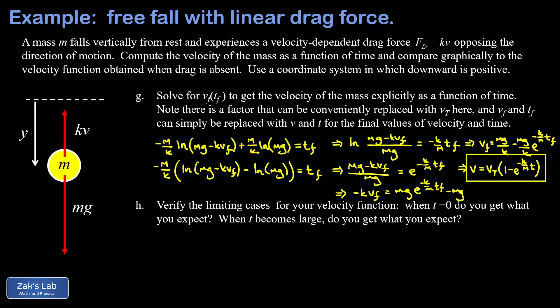Part h raises an important point for advanced physics: there's often no answer key, so you need to check that your answer is physically reasonable by looking at limiting cases. First, when t equals zero: plugging in gives e to the zero equals one, so we get v_t times one minus one, which is zero. The mass was just released from rest, so its velocity should indeed be zero — that checks out.